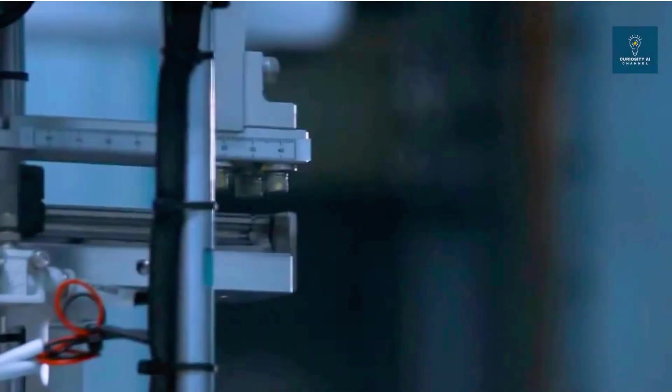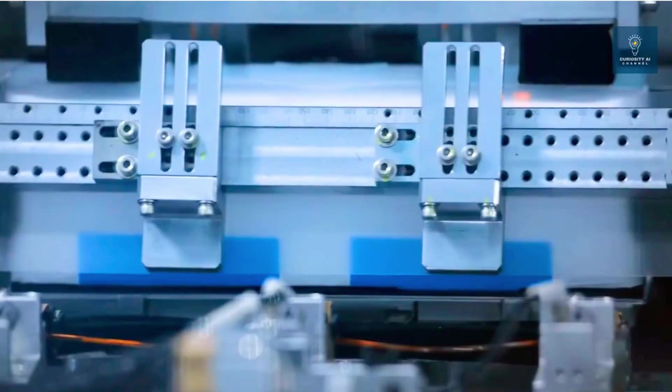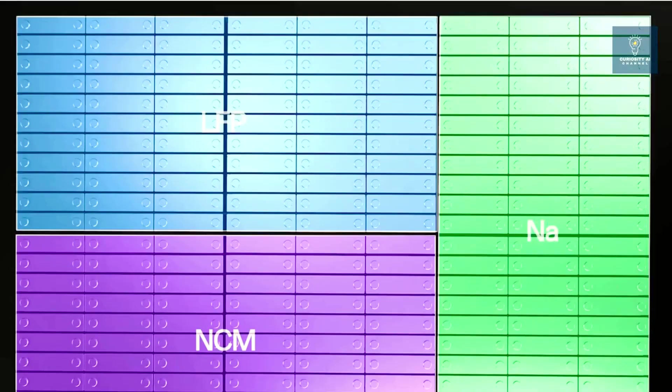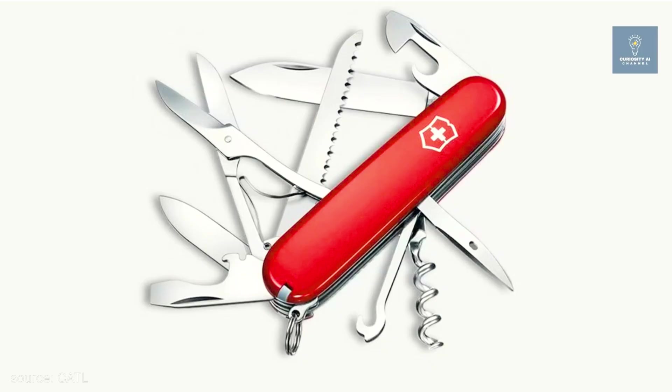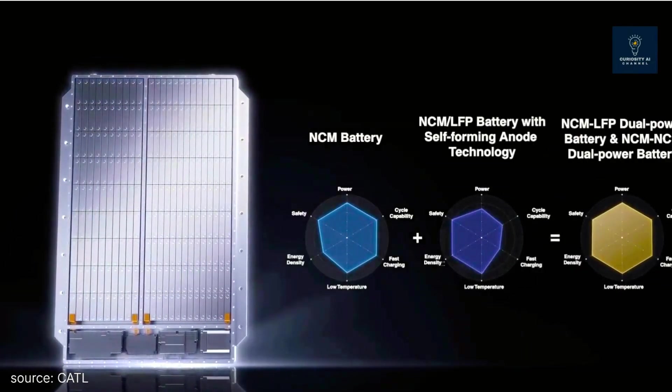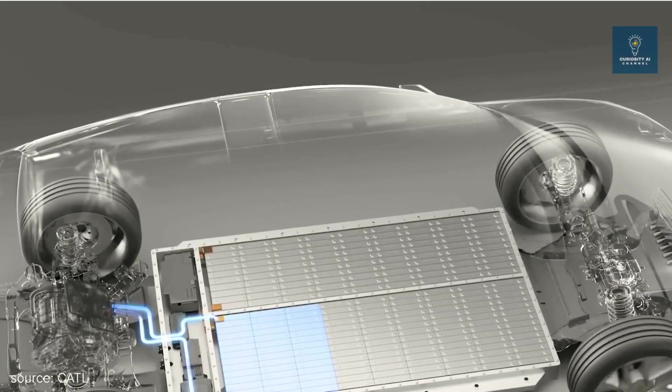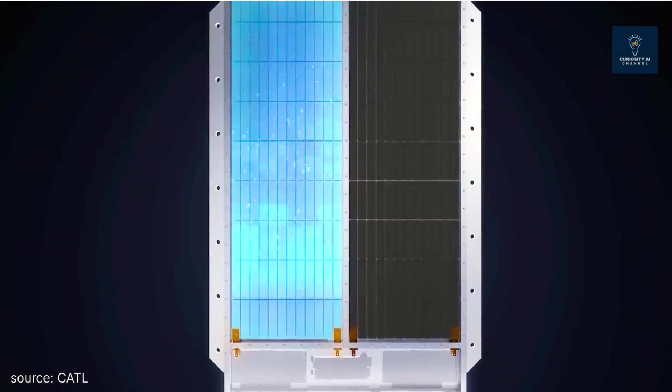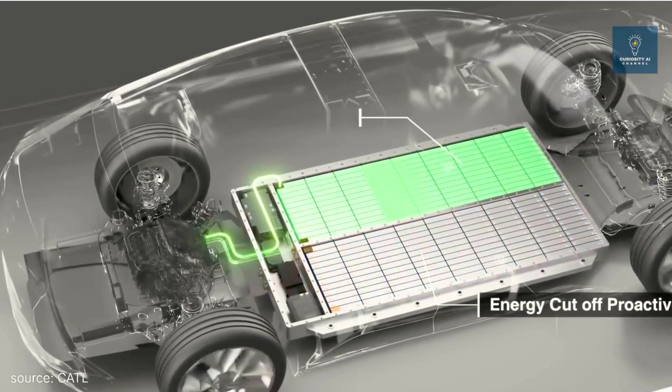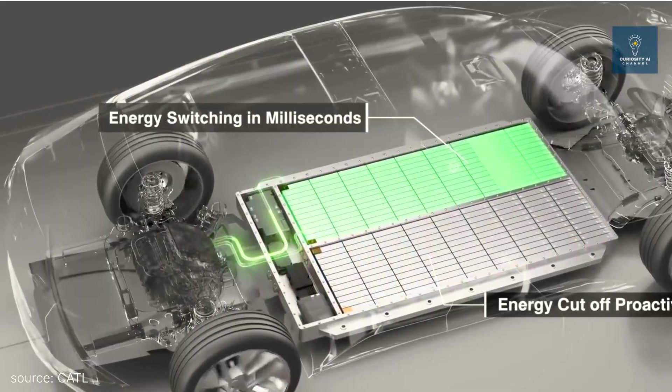But CATL isn't putting all their eggs in the sodium basket. Their most intriguing technology might be Freevoi, a hybrid battery pack that combines multiple chemistries in a single system. Think of Freevoi as the Swiss army knife of batteries. It comes in three configurations: classic LFP, high-performance nickel-manganese-cobalt, and now sodium-ion. Each chemistry brings specific strengths, and Freevoi's power management system intelligently switches between them based on conditions and requirements.